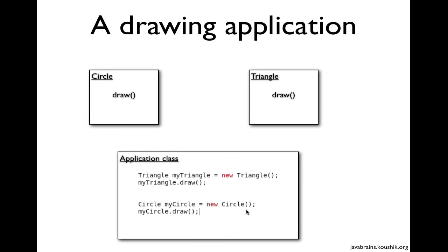Similarly, I'm instantiating the circle object and calling the draw method of the circle object. Now let's say I don't want my application class to be tied specifically to these objects - I want to use polymorphism. The whole idea of polymorphism is having some kind of an interface class or a parent class, and I use the parent class to execute the methods. At runtime, I supply different children of the parent class and the methods of the child get executed instead.